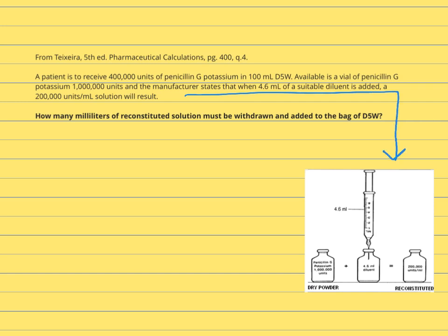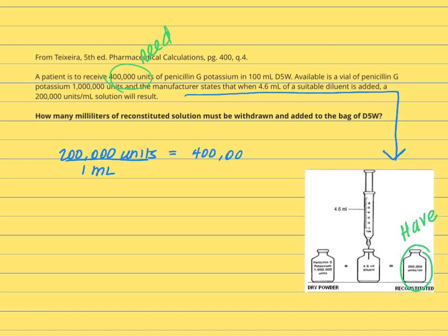So the question is, how many milliliters of reconstituted solution must be withdrawn and added to the bag of D5W? We know that we have 200,000 units per mL, and we need 400,000 units of penicillin G potassium. The way we solve this is pretty simple — we're going to set up a quick ratio: 200,000 units per 1 mL is equal to 400,000 units over x mL.